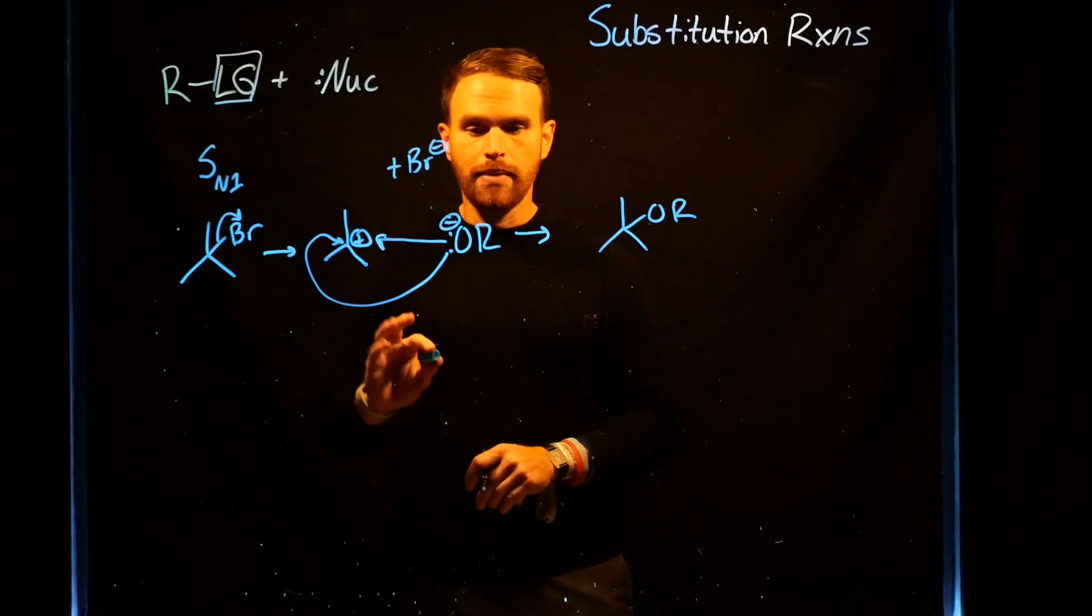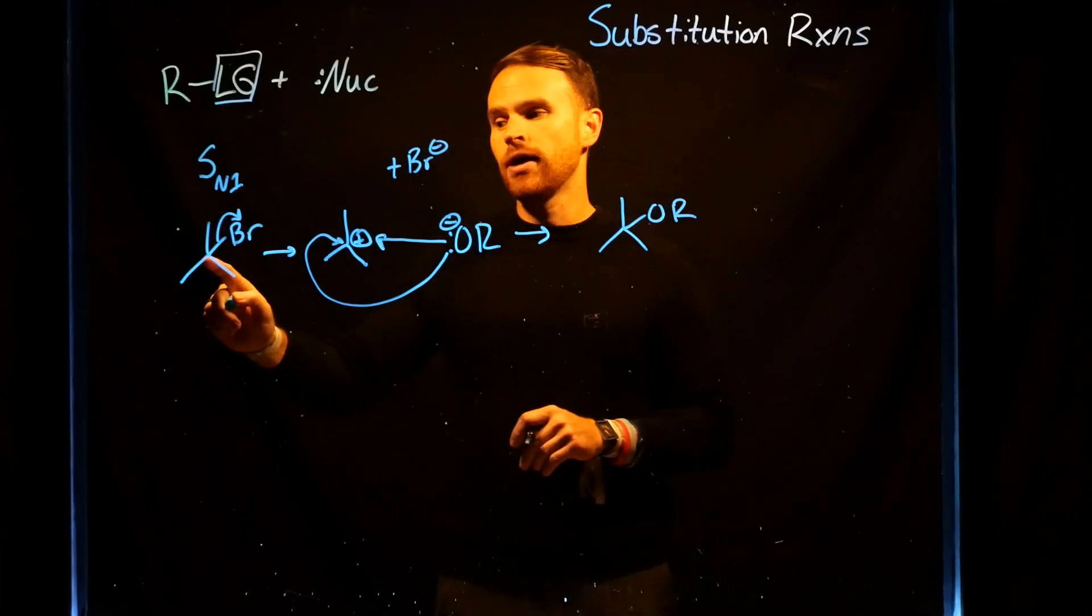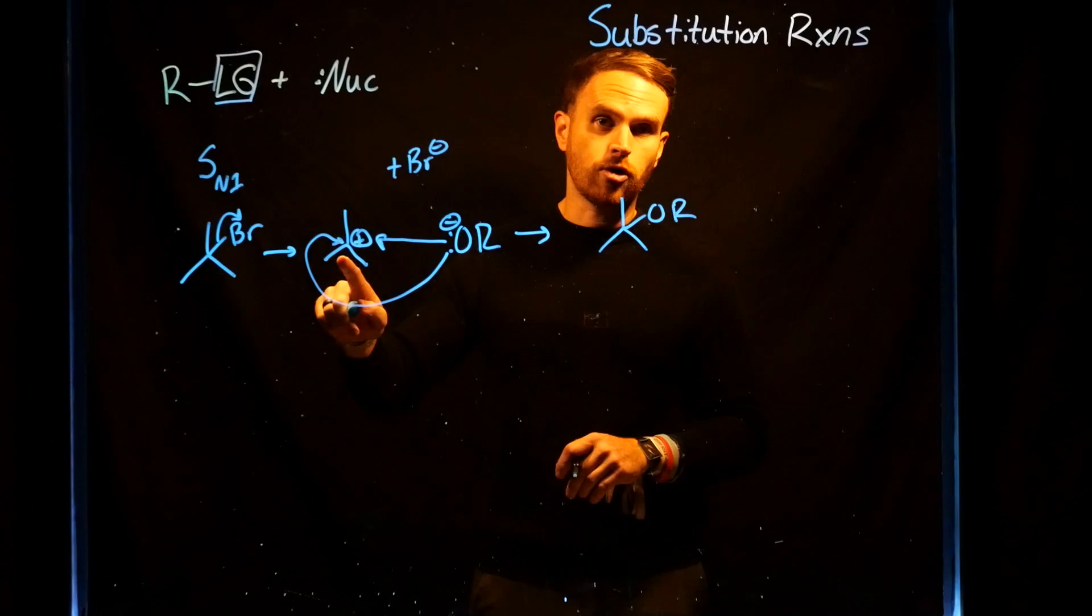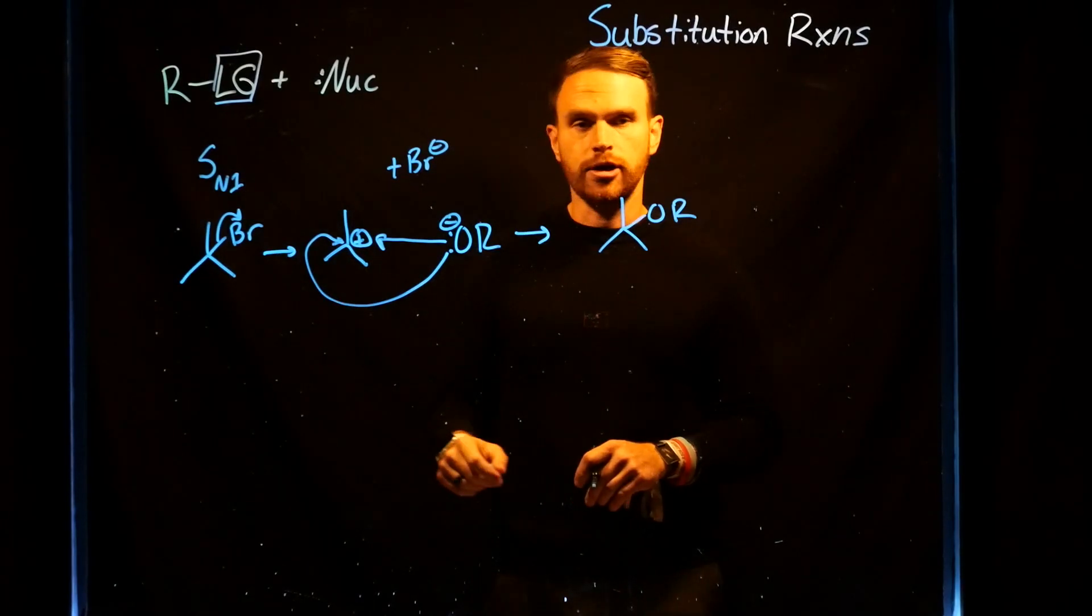The SN1 mechanism is going to be the one that dominates when you have a tertiary carbon, because you can generate a relatively stable carbocation only when you have a tertiary carbon.